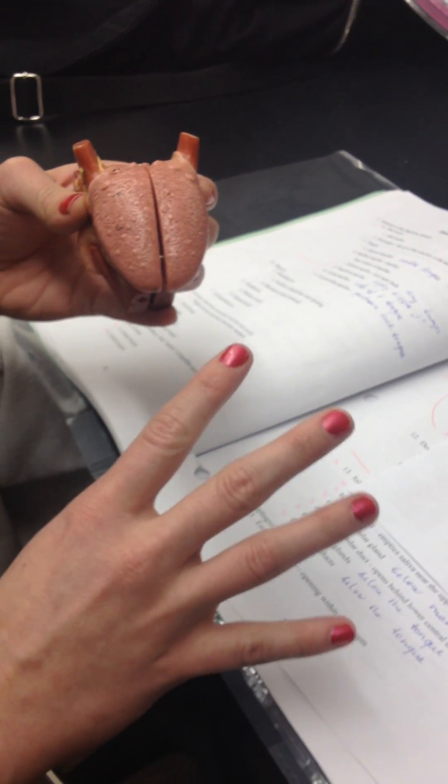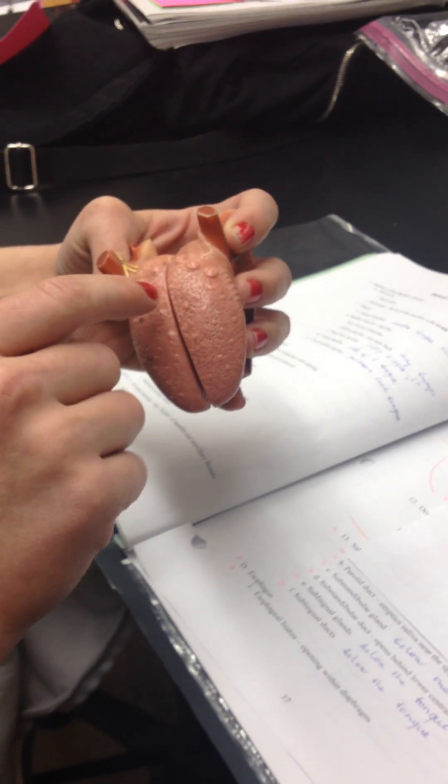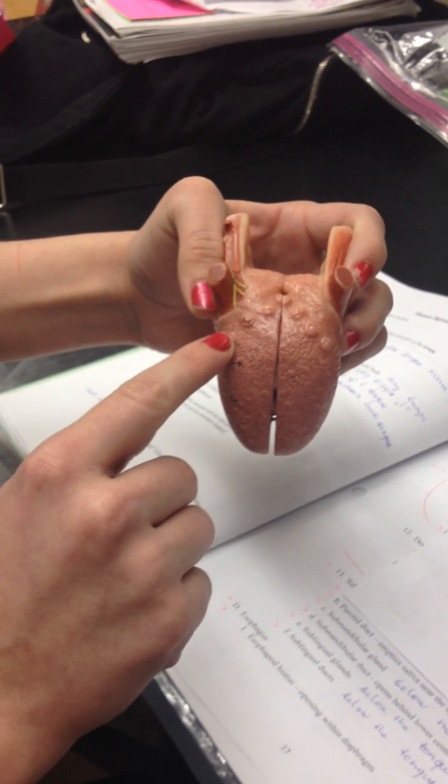First, we have four different types of your papilla. Three of them have taste buds. If you see these giant ones in the back that made an inverted V, that's going to be your circumvallate papilla.